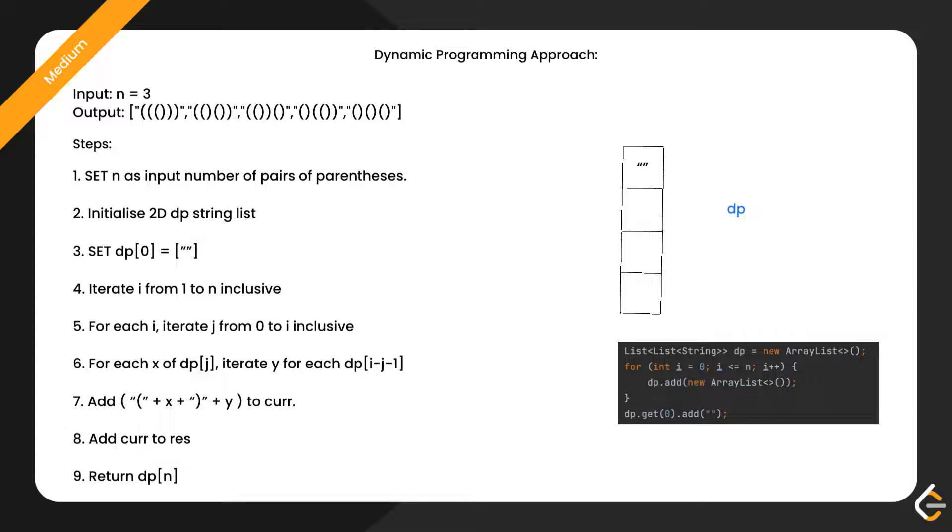Set n as input number of pairs of parentheses and initialize 2D string list. Add empty string to dp[0]. Let's discuss the base conditions in the next slide.